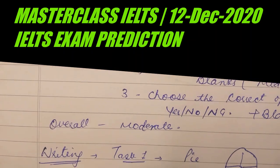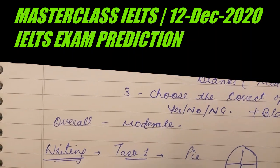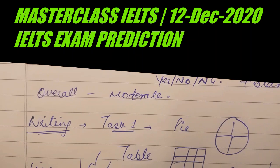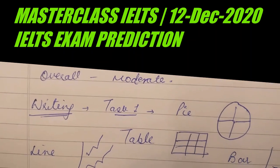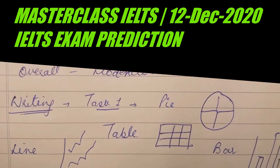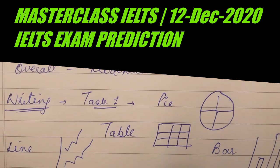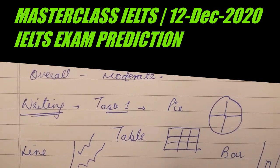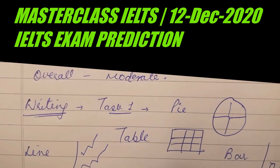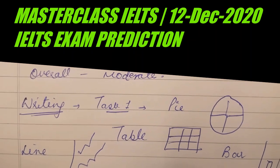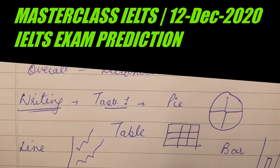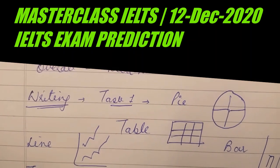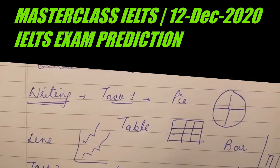Now coming to the writing part for academic: Task 1 — there can be a pie chart, there can be a table, or a line or bar graph. These four graph types are expected and tentative this time, so try to practice them. Focus on formal vocabulary and trends — how we discuss them. You can go through the writing task 1 videos on my channel, or contact me personally if needed.